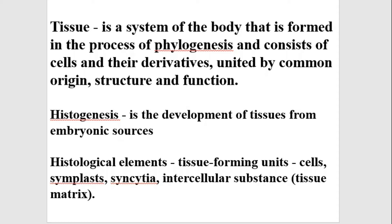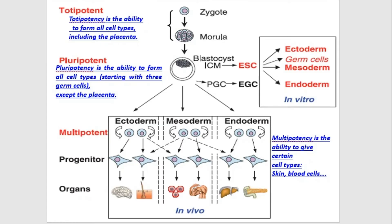During their lifetime, each type of cell undergoes differentiation. Differentiation is a process during which cells pass a number of developmental stages, acquiring certain structural and functional properties of mature elements. Each type of tissue creates its own differon — a set of all cells making up a given line of differentiation, from the least differentiated stem cells up to the most mature differentiated cells.